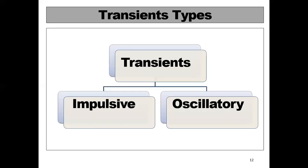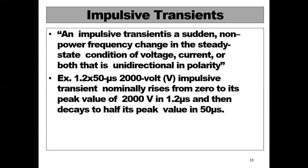The types of transients are: impulsive transient and oscillatory transient. An impulsive transient is a sudden non-power-frequency change in the steady-state condition of voltage, current, or both, that is unidirectional in polarity. It is called an impulsive transient.